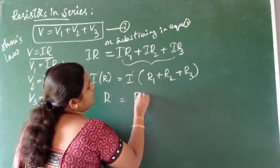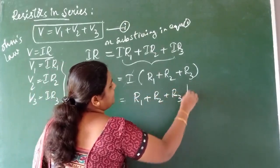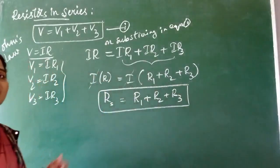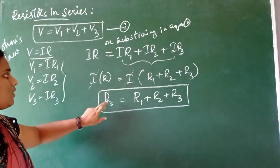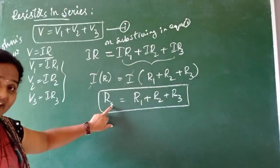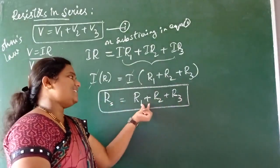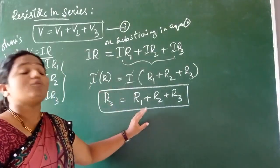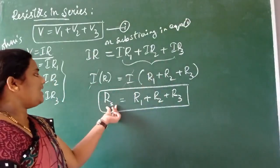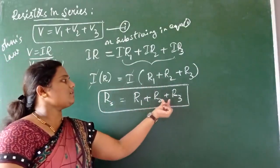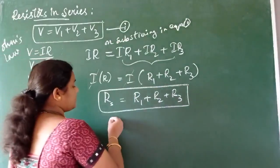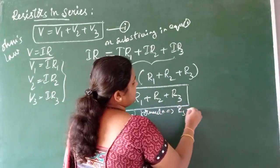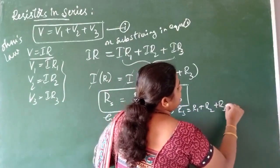So the total resistance equals R1 + R2 + R3. This total or effective resistance in series is often represented as R_s. The total equivalent resistance in series equals the sum of individual resistances. So we have R_s = R1 + R2 + R3. If N number of resistors are connected, the general formula is R_s = R1 + R2 + R3 + ... up to N terms.